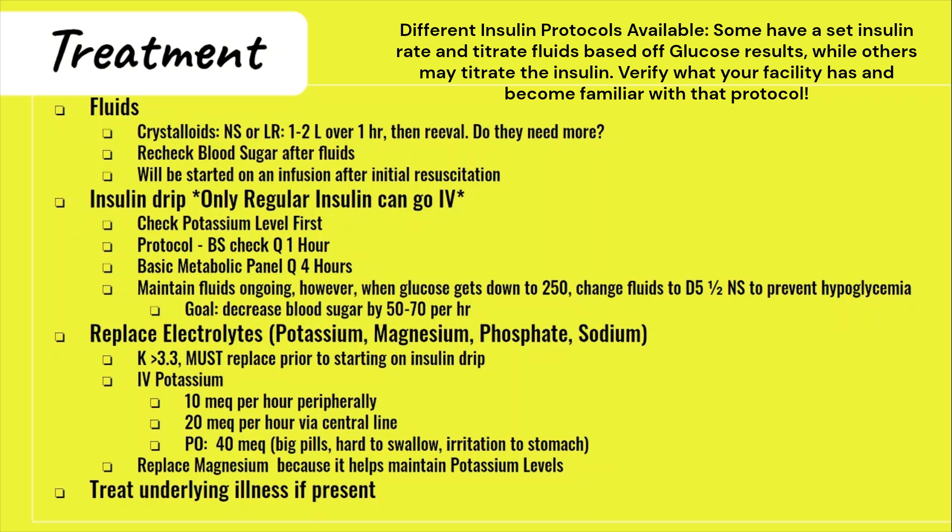Typically, to volume resuscitate your patient, you're going to give 1 or 2 liters of a crystalloid over 1 hour, then re-evaluate to determine if more fluids are needed as a bolus. Fluids are very important because your patients will be very dry and dehydrated — often borderline in shock — and we want to resuscitate early to prevent all the bad stuff associated with shock. You will re-check the blood sugar after giving the initial fluids to assess what kind of impact it had, because blood sugar can drop significantly from fluids alone.